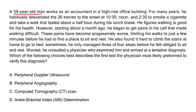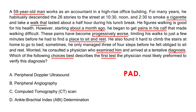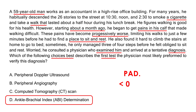Clinical vignette 2: A 59-year-old male accountant habitually descended 26 stories to smoke and walk for half an hour. Starting one month ago, he developed progressive calf pain that limits his walks to just a few minutes before he must rest, and he can only climb three or four stairs before needing to sit. He likely has PAD, and the best first test to verify this diagnosis is the ankle-brachial index. A value less than 0.9 confirms the diagnosis.